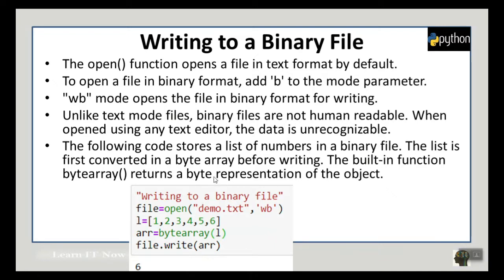The following code stores a list of numbers in a binary file. The list is first converted to a byte array using the built-in bytearray function, and then that byte representation of the object is written using file.write.